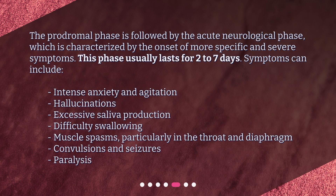The prodromal phase is followed by the acute neurological phase, which is characterized by the onset of more specific and severe symptoms. This phase usually lasts for 2 to 7 days. Symptoms can include intense anxiety and agitation, hallucinations, excessive saliva production, difficulty swallowing, muscle spasms particularly in the throat and diaphragm, convulsions and seizures, and paralysis.